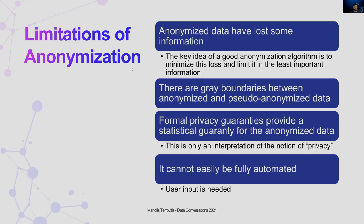Anonymization is not a process that can be easily automated. This is because it's complicated — there are always user choices that are needed, and also because it's a new process and there's not enough experience from the industry on how it is usually done or what is usually important. Because information is lost, it is important that the user guides the process and limits the loss to important parts of the information, guiding the transformation to work on the less important parts of the personal information.